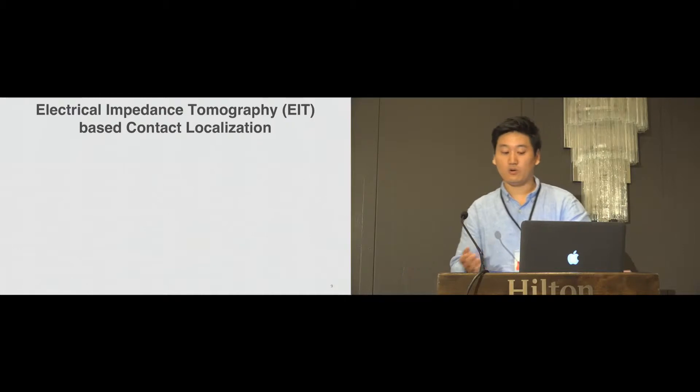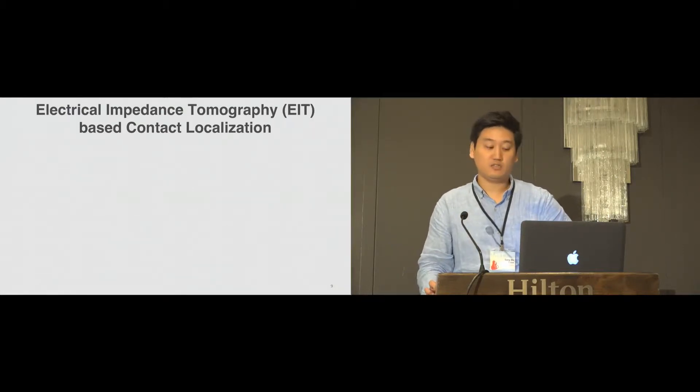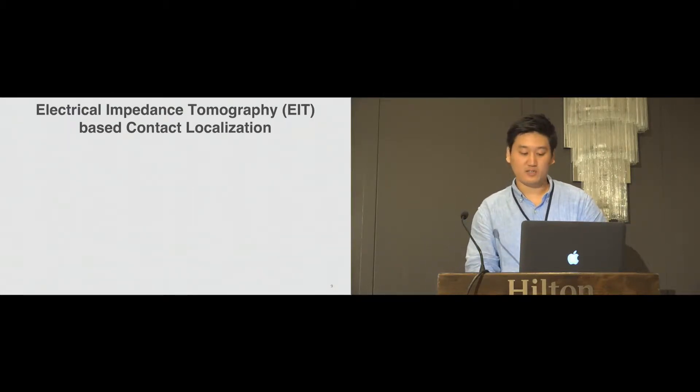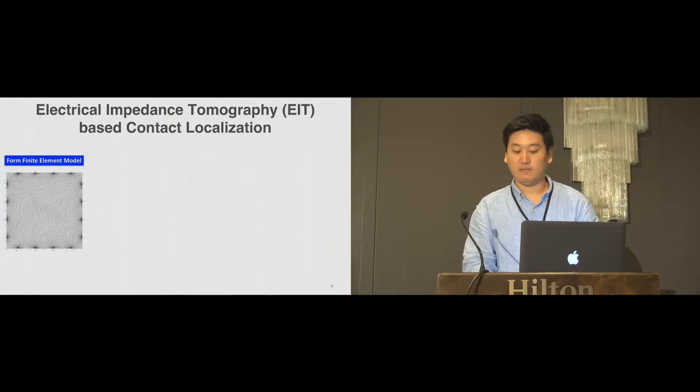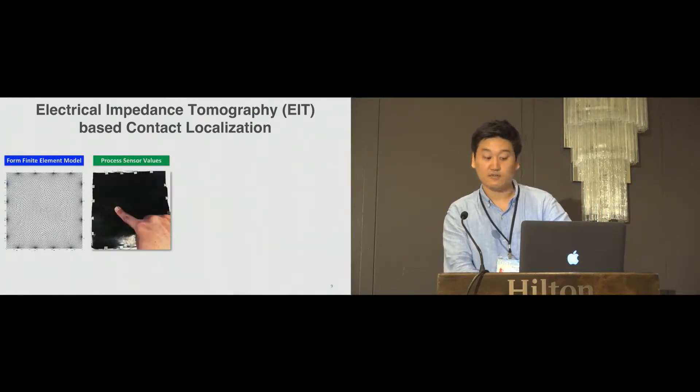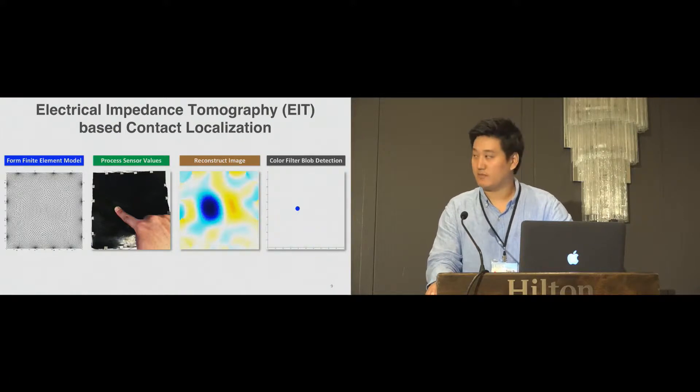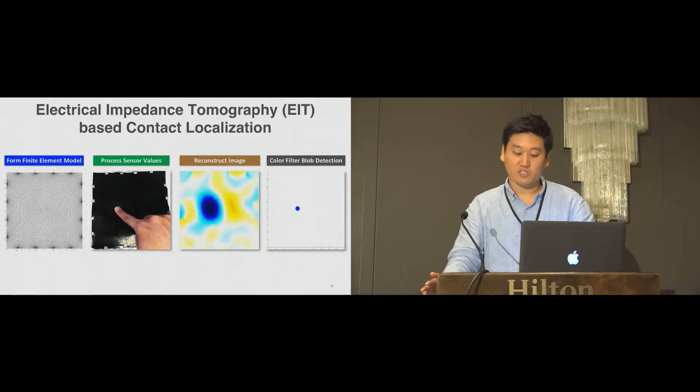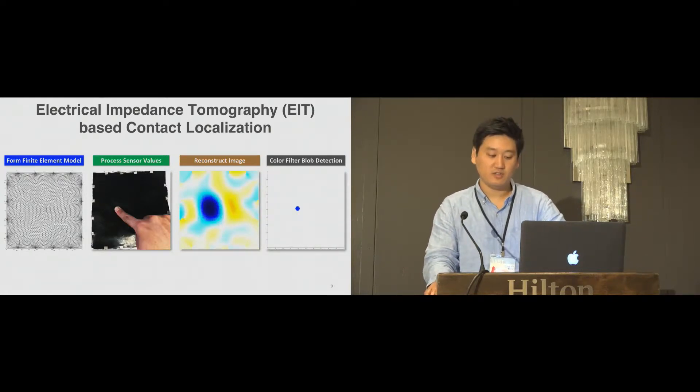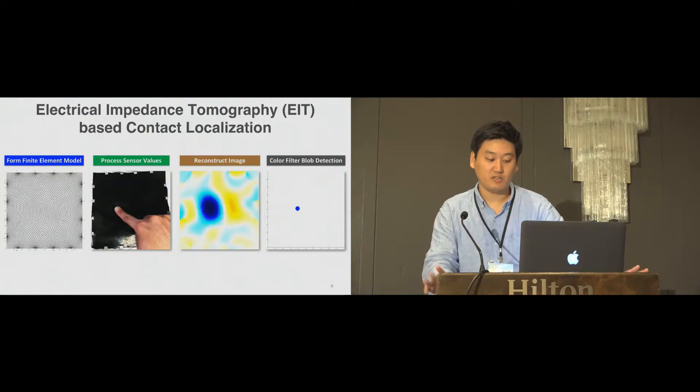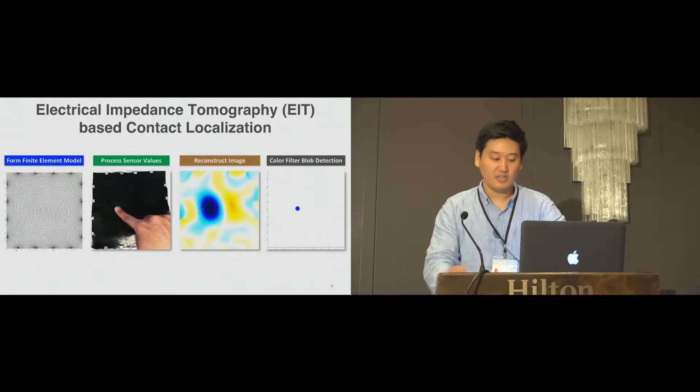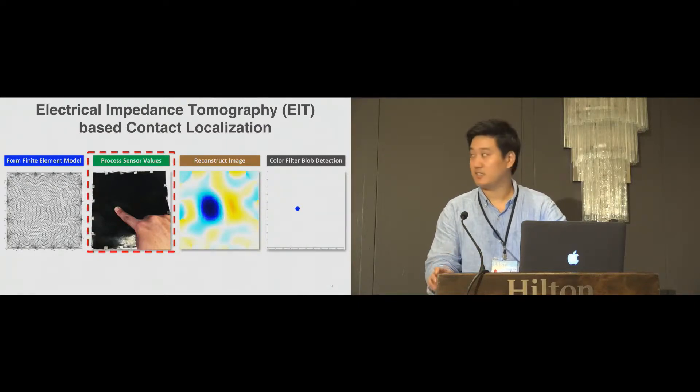For contact localization, we employ electrical impedance tomography. The basic workflow is forming a finite element model on the given shape, processing sensor values, reconstructing images based on these values, and applying color block detection to locate fingertip contact. EIT technique estimates contact position based on the resistance distribution from the conductive material. Here, an inverse problem analysis is used along with the measurement from the sensor boundary. In our work, we focus more on processing sensor values.